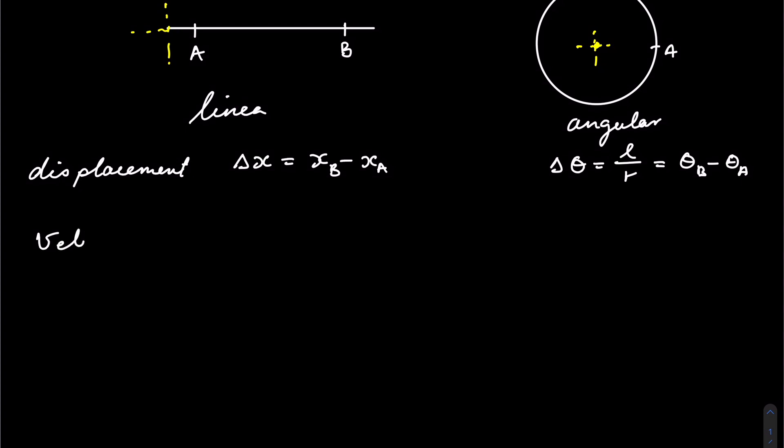The velocity is given by the change in X over the change in time, and an equivalent equation for the circular motion will be given by the change in theta over the change in time. You can also use the derivative.